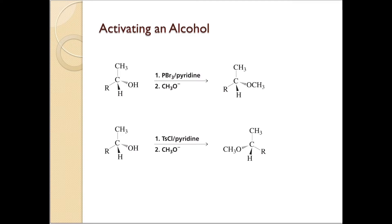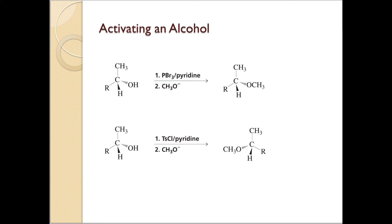The most important thing here is looking at the stereochemistry of the reaction. For the first reaction, where you reacted with PBr3 and converted it into an alcohol halide, and then that alcohol halide was reacted with methoxide, it actually resulted in retention of configuration — you have a wedge bond on both sides in both the reactant and the product. But when you look into the second reaction, where you converted an alcohol into a sulfonate ester using tosyl chloride and then reacted with a nucleophile, it actually inverted the configuration.